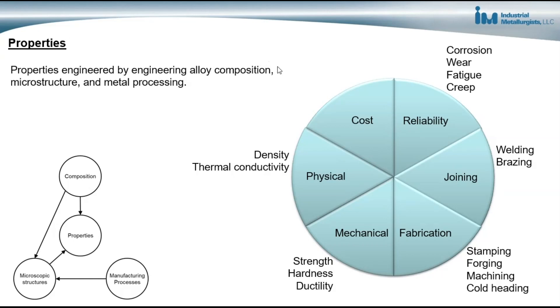The properties can be engineered by engineering the steel's alloy composition, its microstructure, and the different manufacturing processes that are used on the steel. This includes thermal and mechanical manufacturing processes.